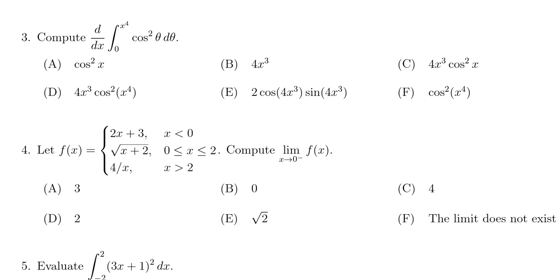So we have to calculate the derivative using that chain rule. We're going to take the derivative with respect to x to the fourth of the integral from zero to x to the fourth cosine squared theta d theta, and then we're also going to times that by the derivative of x to the fourth with respect to x.